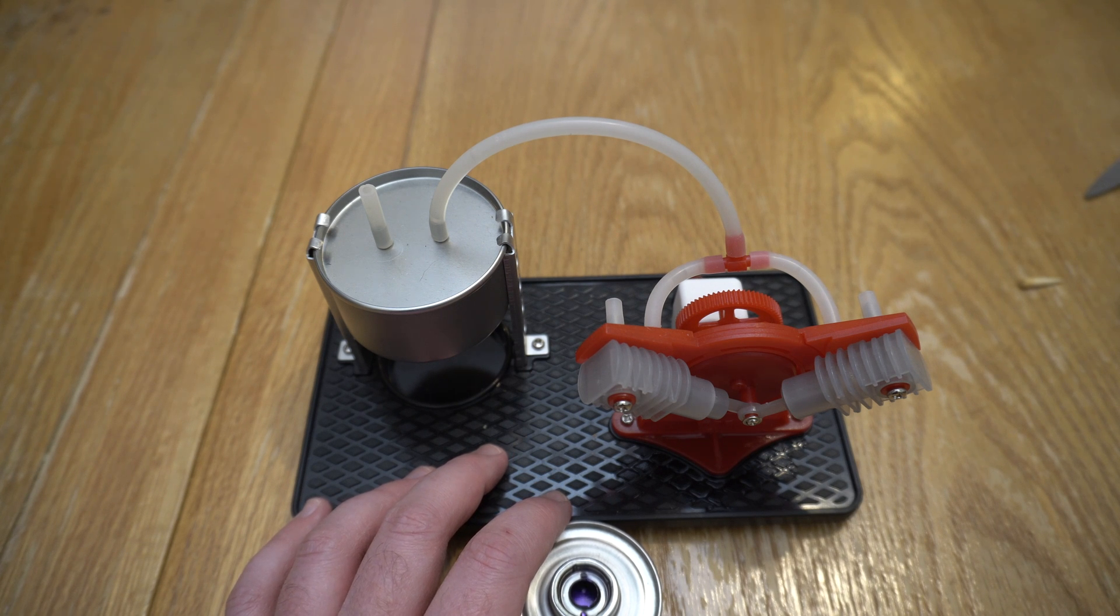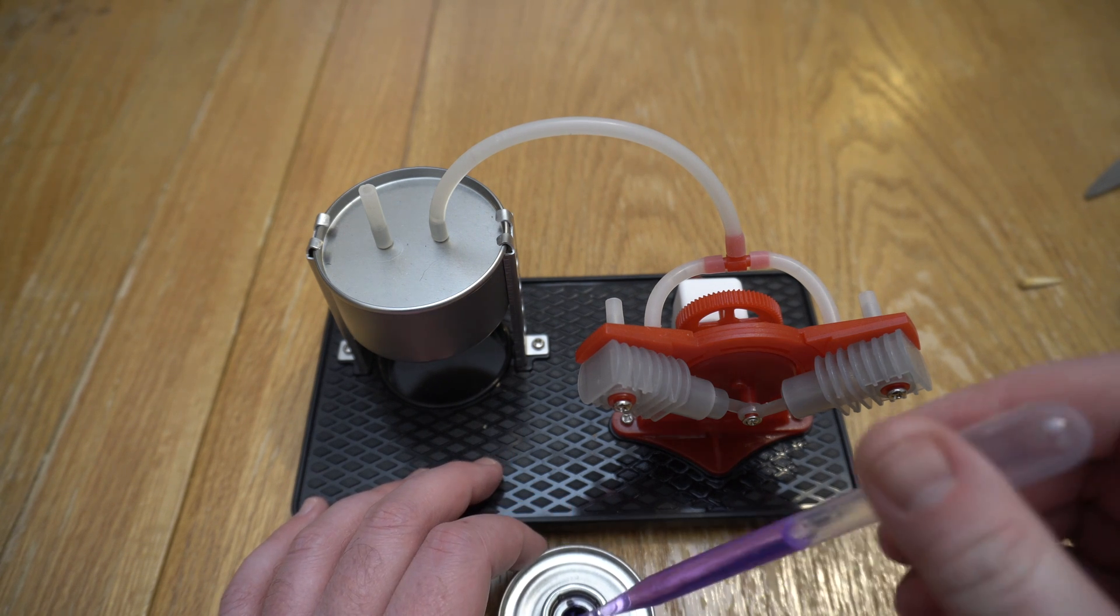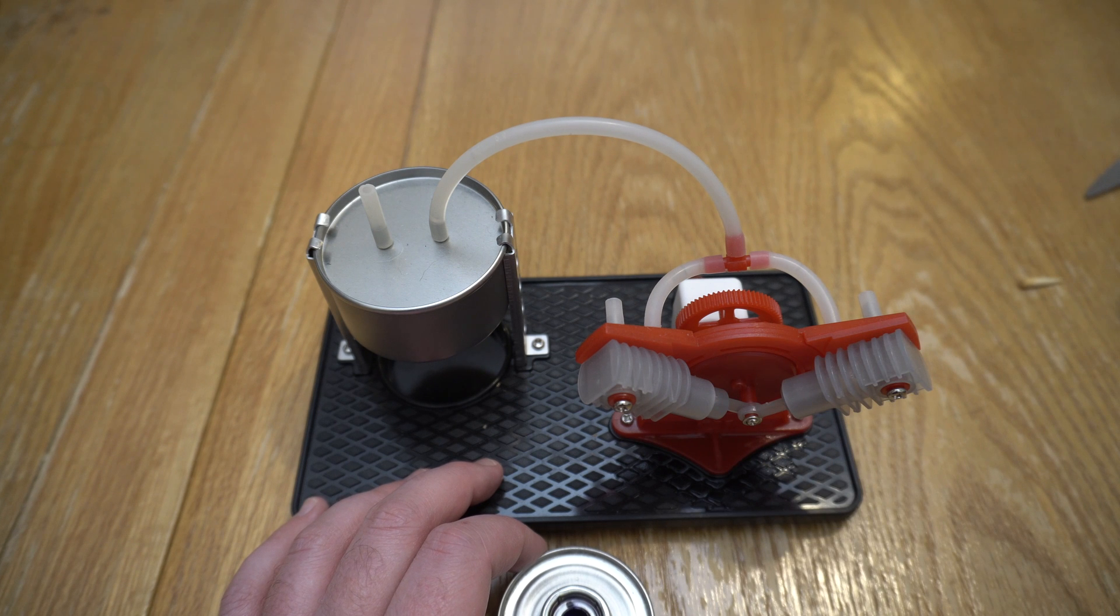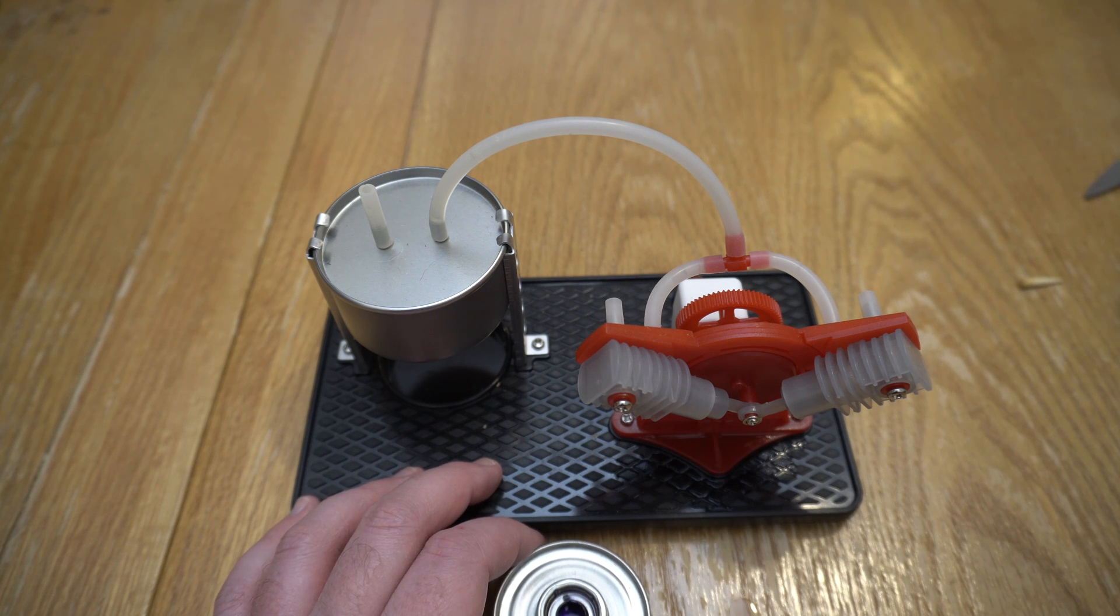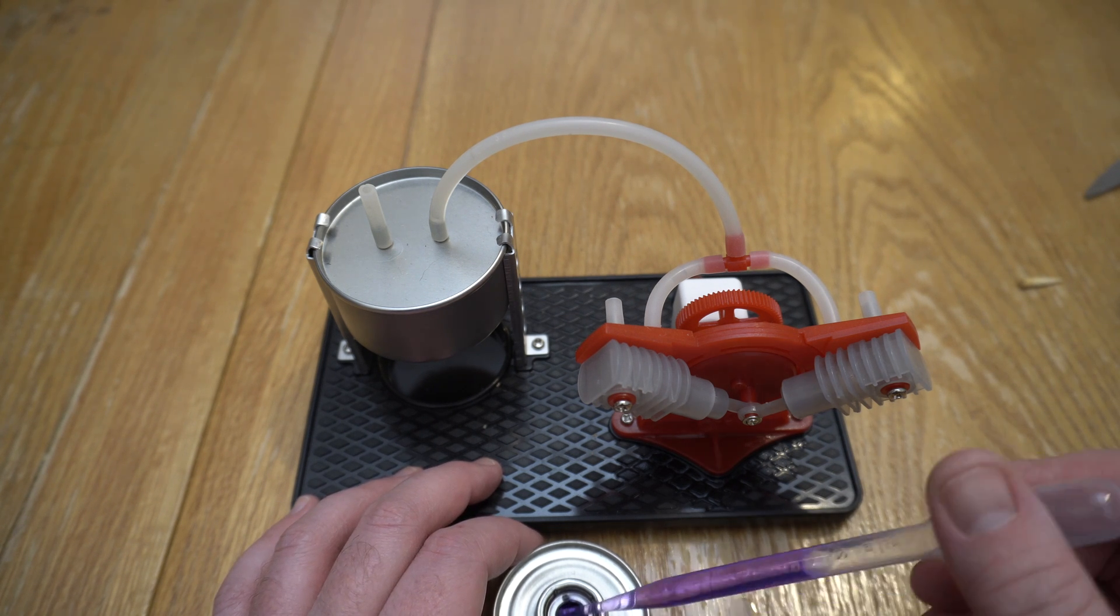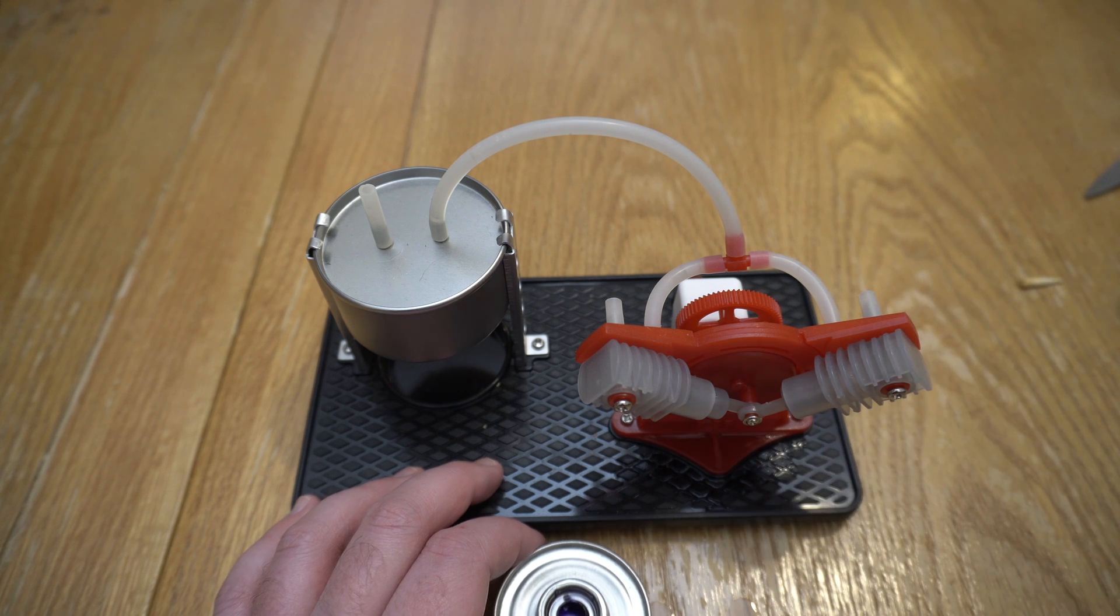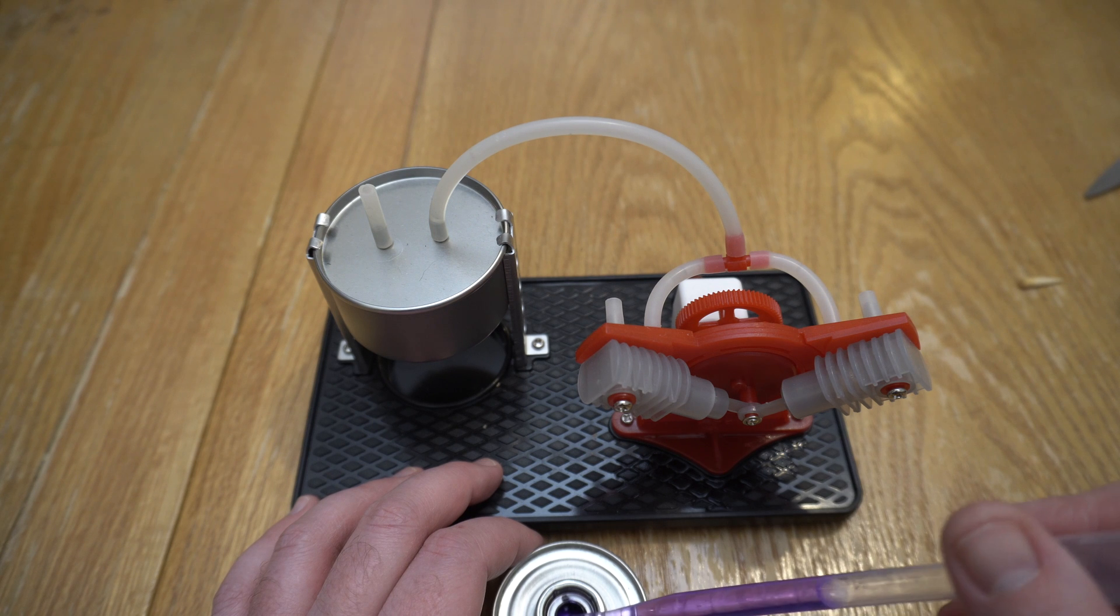So first things first, we're going to put meth into this little burner. So it probably needs a fair bit of meth, so we're going to maybe put I don't know 15 odd mils into it. So all meth is, it's alcohol, you know, normal alcohol, the stuff we drink every day, every morning, every afternoon.